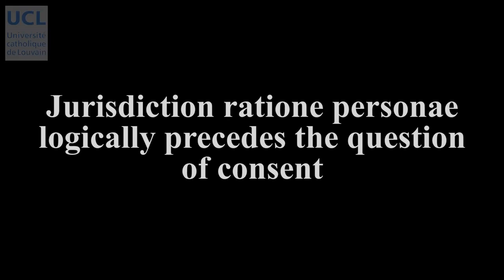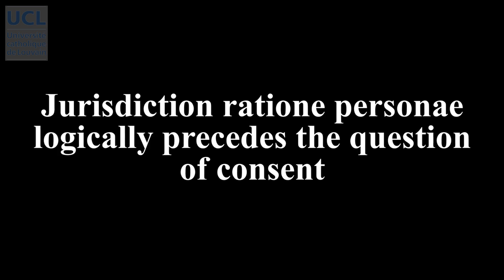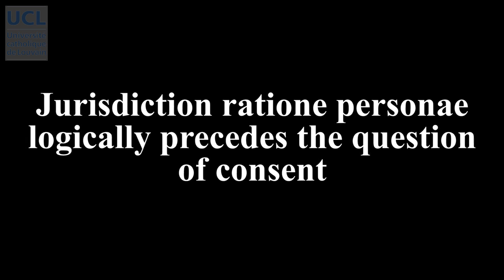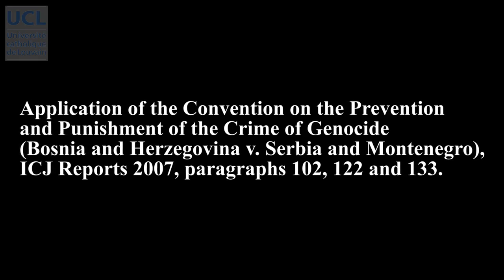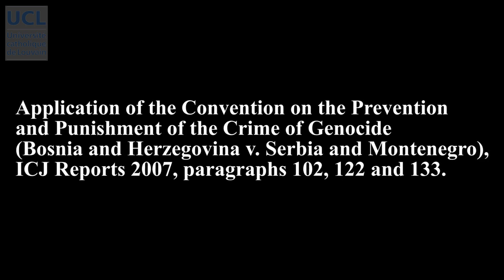Jurisdiction rationae personae is not a matter of consent by the disputing states, but is a statutory issue that the court may examine ex officio, even if none of the disputing parties have raised any objection in that regard. Furthermore, jurisdiction rationae personae logically precedes the question of consent — it is only if states have access to the court that they may consent to its jurisdiction. This was made clear by the court in several cases, notably in the judgment of February 2007 in the case concerning the Application of the Convention on the Prevention and Punishment of the Crime of Genocide, between Bosnia and Serbia.